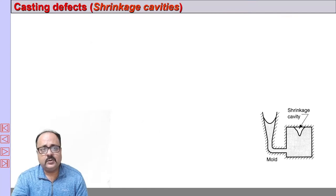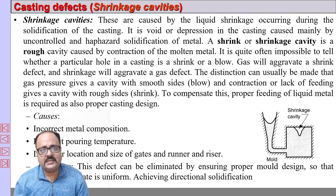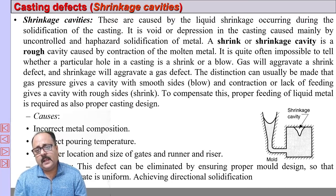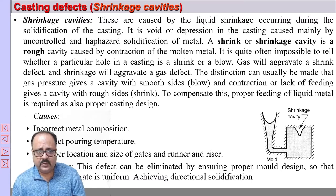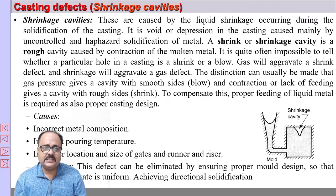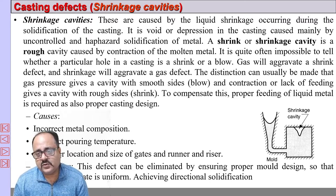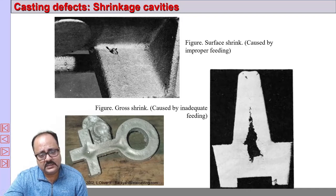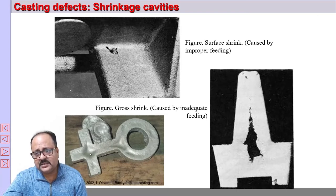Then we have shrinkage cavities. These occur because of improper solidification. If you are not able to incorporate directional solidification in the casting, shrinkage cavities will happen. Your riser should be sufficiently positioned to compensate for the shrinkage that occurs. This occurs due to faulty casting design, improper riser placement, or insufficient riser volume. You can overcome this using chills and properly locating the risers. Shrinkage cavities mainly occur in the heavy sections of the casting.